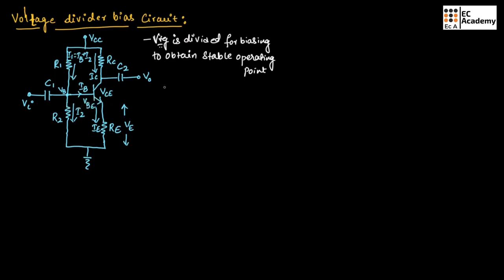You need to remember that I2 will be equal to 10 times Ib — this condition is very important for biasing. Also, remember that Vbe will be equal to 0.7 volts.